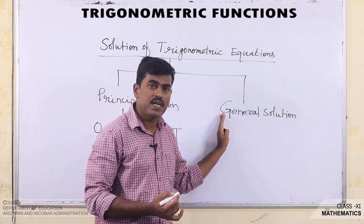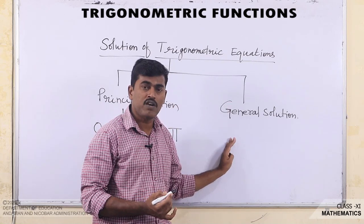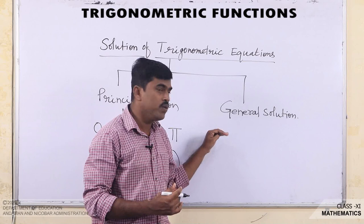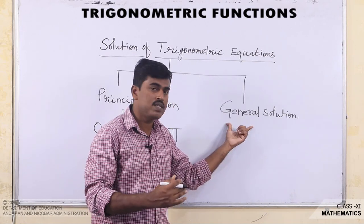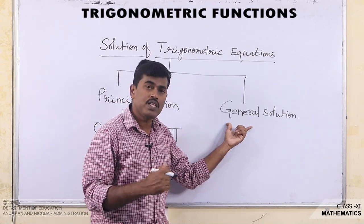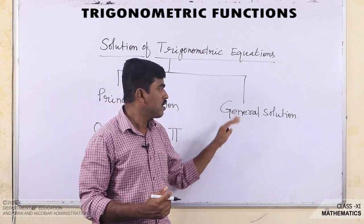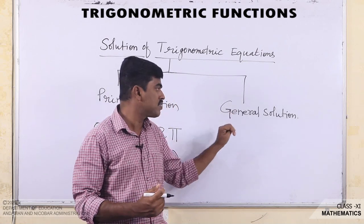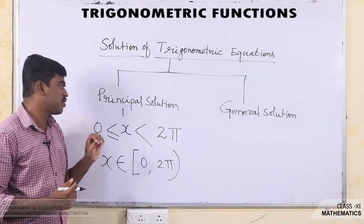The general solution means all the solutions of a Trigonometric equation, expressed in terms of an integer n, which gives all the solutions of the equation. However, we are not going into general solution because it has been deleted from the syllabus — we will take only the principal solution.